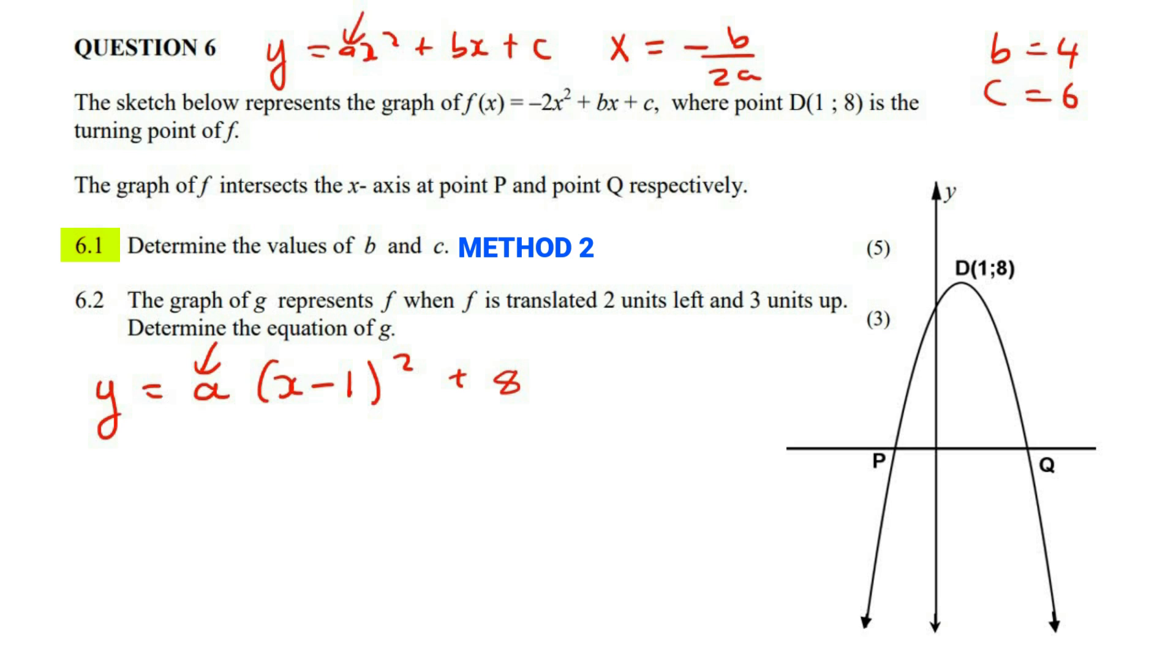Because we know that a comes from ax squared plus bx plus c. So a is the number in front of x squared. But look, we have it. So we can fill in a as negative two. And so there we have an equation.